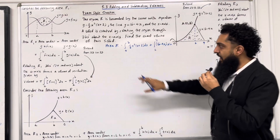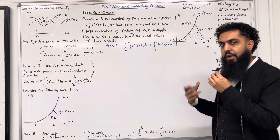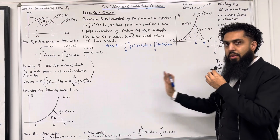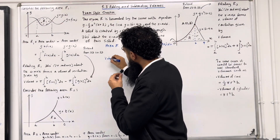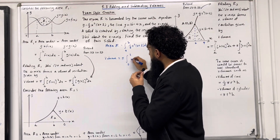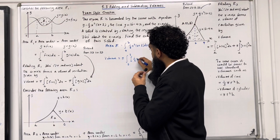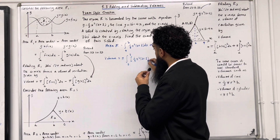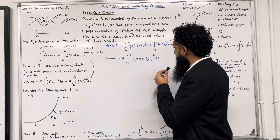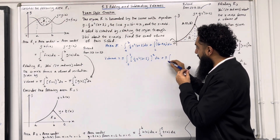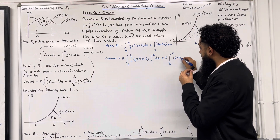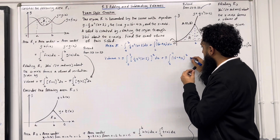Now I want to rotate area R 360 degrees about the x-axis, extending from 2D to 3D. The volume of revolution is given by π multiplied by the integral from 0 to 2 of [½x²(x + 2)]² dx, plus π multiplied by the integral from 2 to 4 of (16 − 4x)² dx.